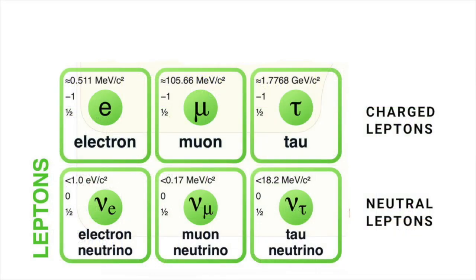There are two main classes of leptons: charged leptons, the most familiar of which is the electron, and neutral leptons, which are known as neutrinos. Charged leptons can combine with other particles to form various composite entities, such as atoms, whereas neutrinos rarely interact with anything. Positronium is a short-lived exotic atom in which an electron and an anti-electron, or positron, are briefly bound together.